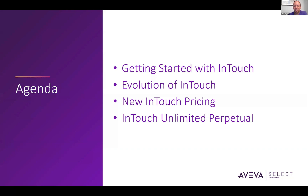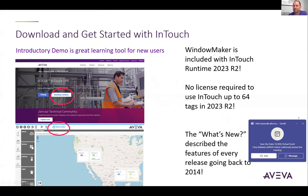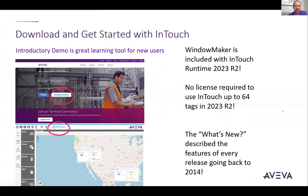We're going to do a quick recap on what's been going on with InTouch the last few years, and then we'll get right into the new pricing. If you are new to InTouch or you want to get the latest version, you can simply go to our website and download InTouch. Just do a search for Viva InTouch, go to the InTouch webpage, download software, and view the pricing now available directly from our website. There's also a nice summary of what's new so you can get acquainted with the latest features of InTouch 2023 R2.